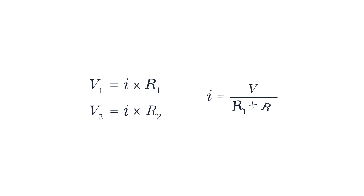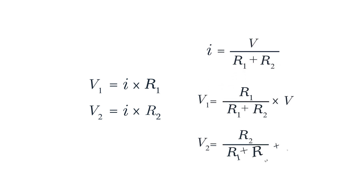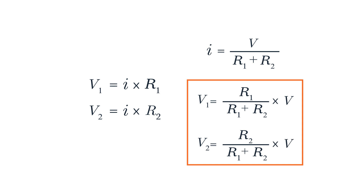The current flowing through the circuit is equal to the total voltage divided by the sum of the resistances. Using these equations, we can find the relationship between the individual voltages and the resistors in a series circuit. Notice that the total voltage across the combination of resistors is divided among the individual resistors based on their resistance values. These equations are called voltage divider relationships because they show how the total voltage is divided among the resistors in this series combination. The voltage drop across each resistor is proportional to its resistance relative to the total resistance.